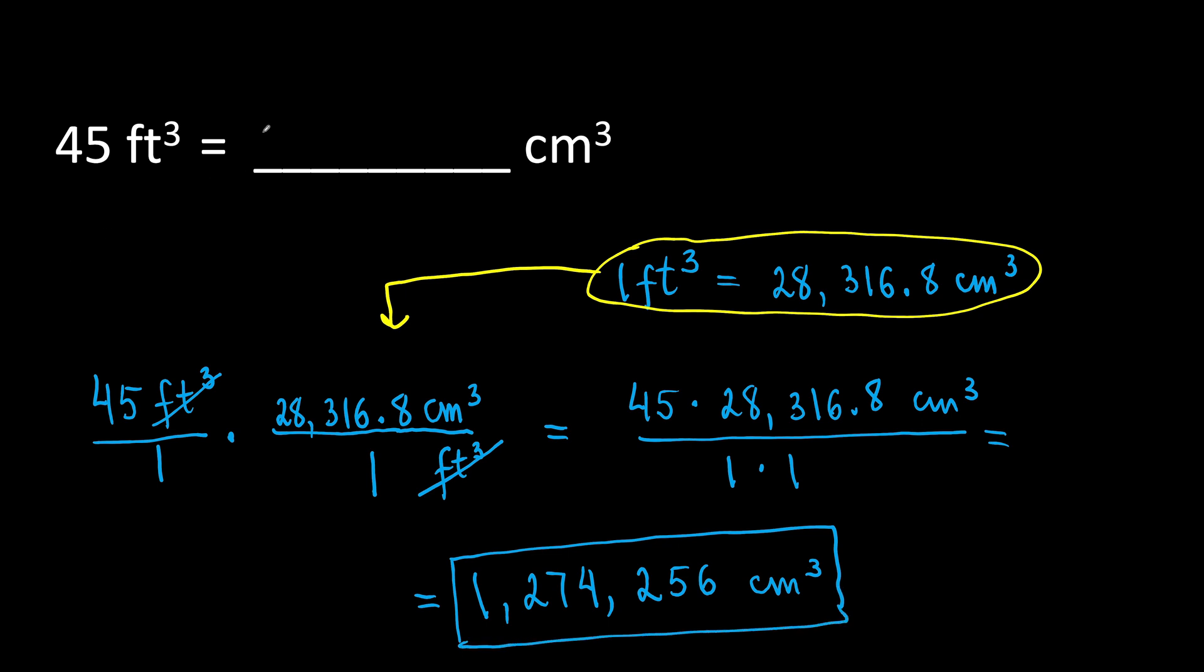So, 45 cubic feet is equal to 1,274,256 cubic centimeters.